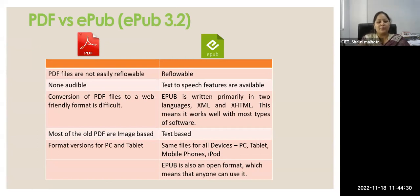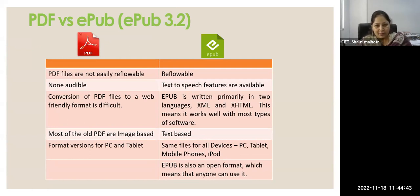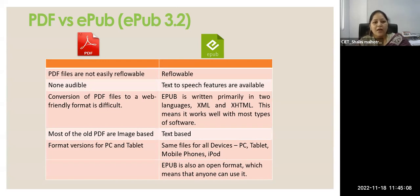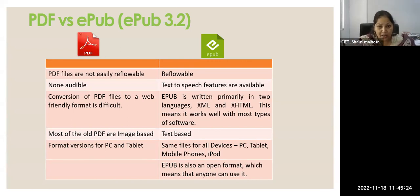Next we'll go to EPUBs. EPUB is another level and type of ebook, and it's very different from PDFs and flipbooks. The major difference between PDFs and EPUBs is that EPUBs are flowable — flowable means that if your device is of any size, whether your mobile phone is five-inch, seven-inch, or a tablet of any size, the text will adjust itself, which doesn't happen with PDFs. Text-to-speech feature is also present in EPUBs. EPUBs are actually XML and HTML — there are two languages used in making EPUBs: XML and HTML. CSS style sheets are also used to style the EPUBs.